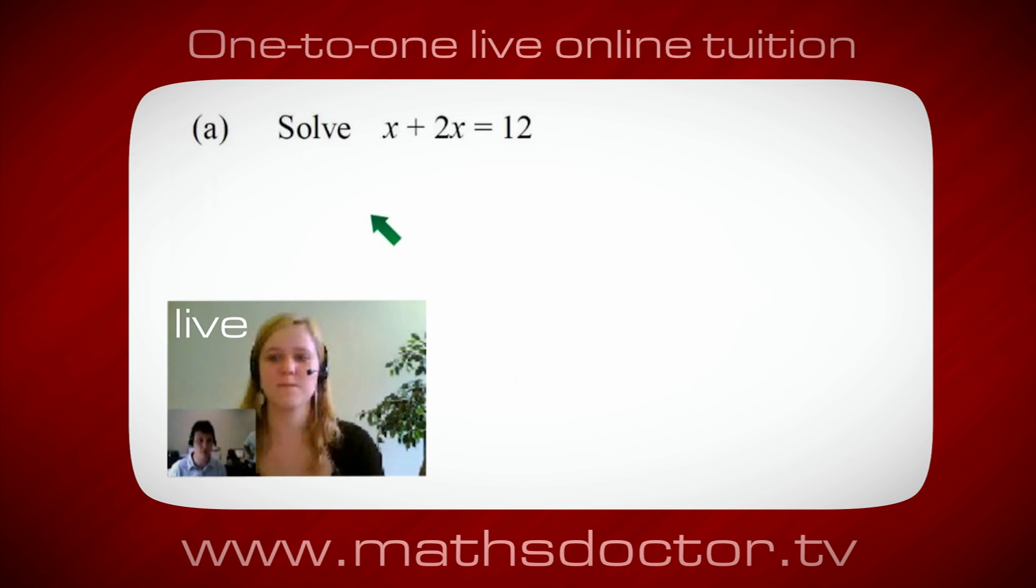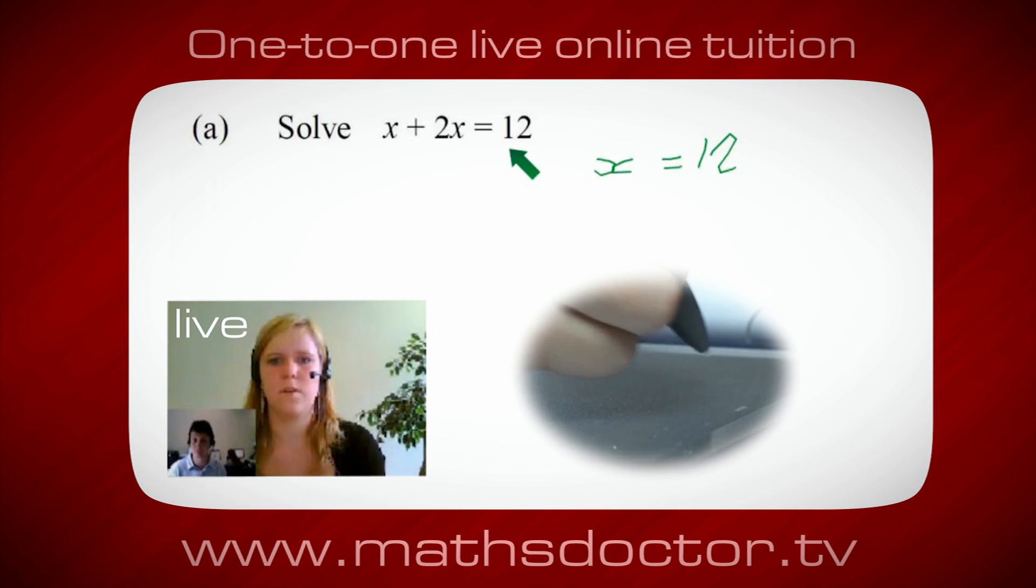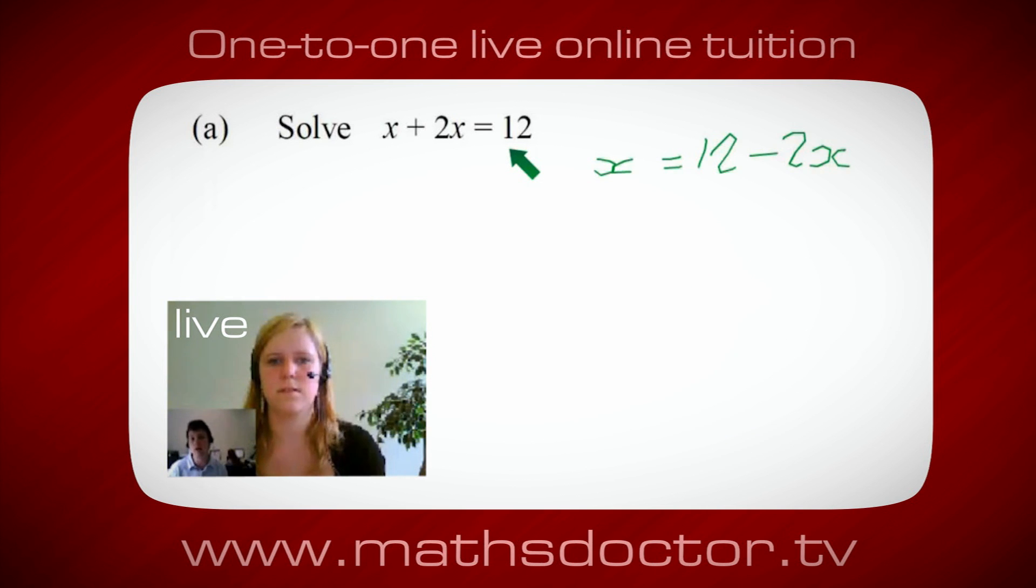OK, Marie, so let's have a look at this one. So solve x plus 2x equals 12. So what do you think you do first? OK, well, I want x on its own. So I would put x equals 12 minus 2x.